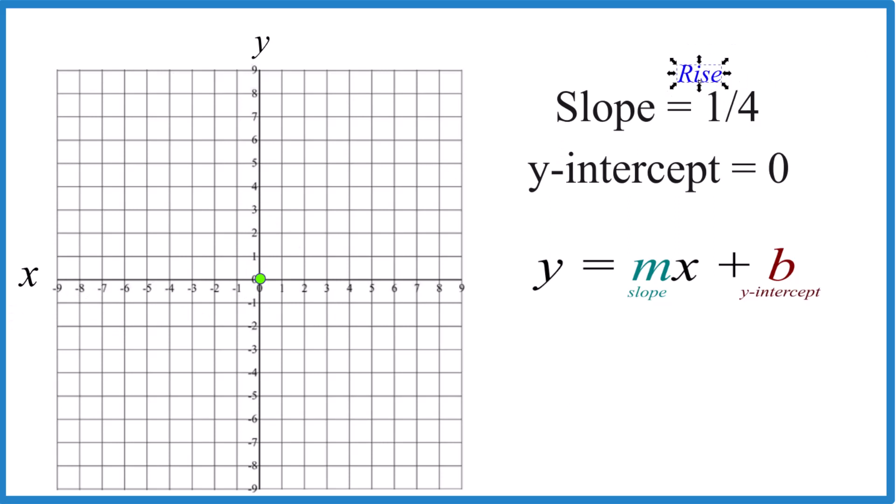For the slope, you can think about that as rise over run. So if we're gonna rise one, run four. So we go here to the y-intercept, we rise one and go over one, two, three, four. From there, we can rise one and go over one, two, three, four. You see our line there?